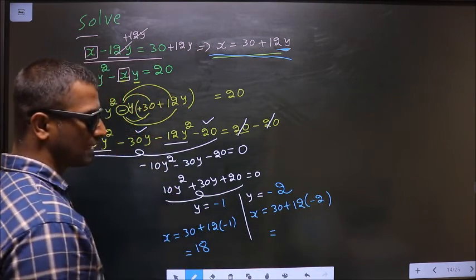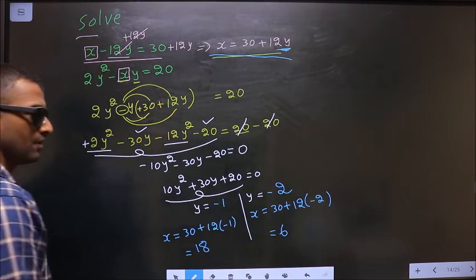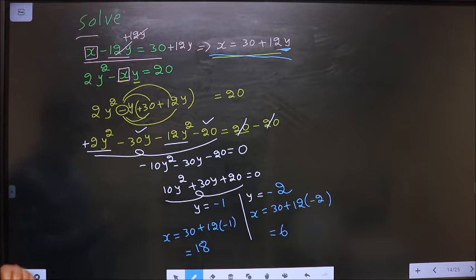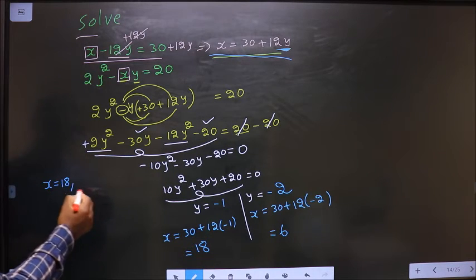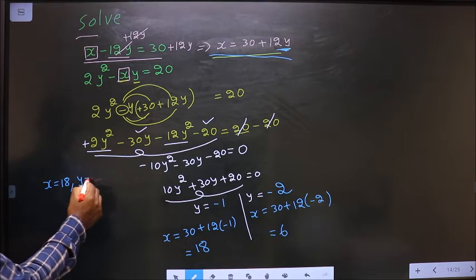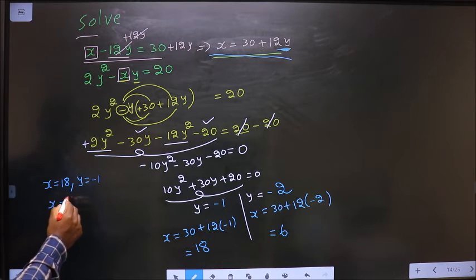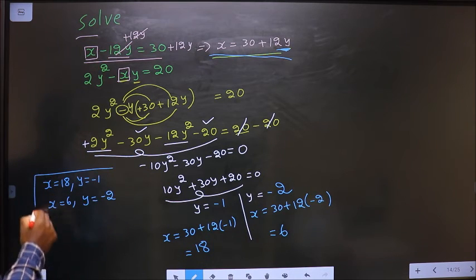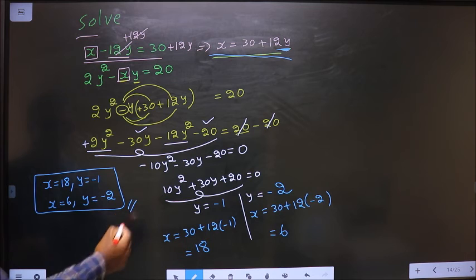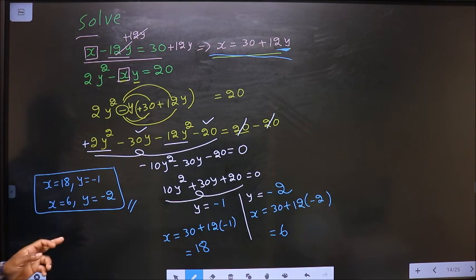So x equal to 30 plus 12 times in place of y minus 2. Plus 12 into minus 2 is minus 24. 30 minus 24 is 6. So finally our answer is x is 18, y is minus 1 and when x is 6, y is minus 2. So this is our answer. Am I clear?